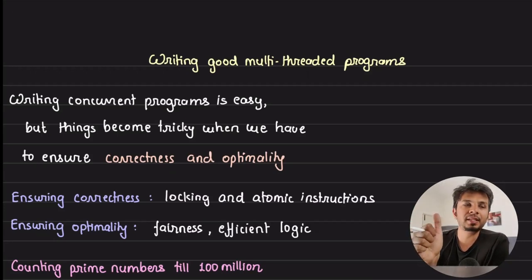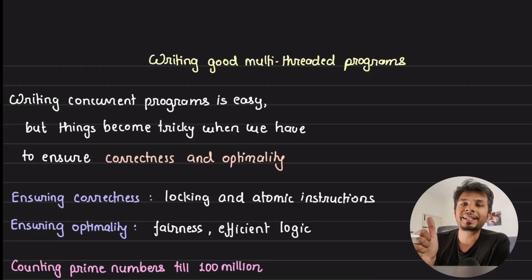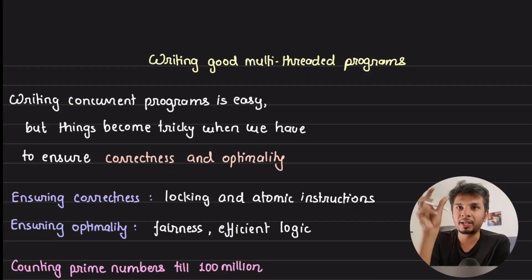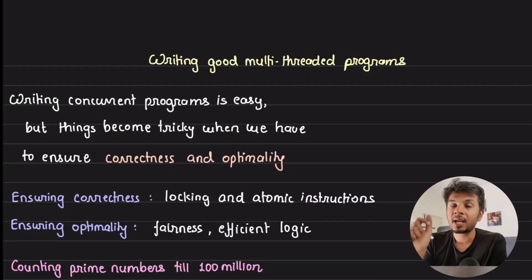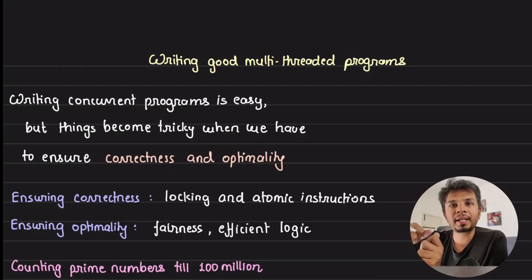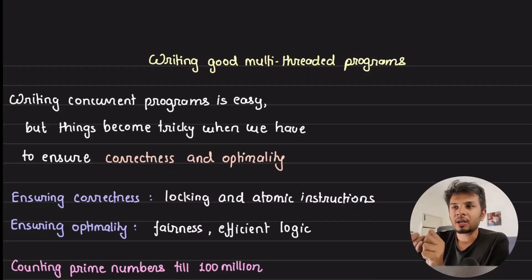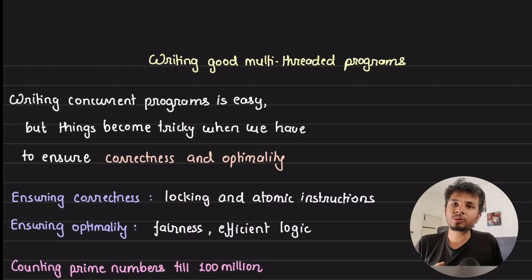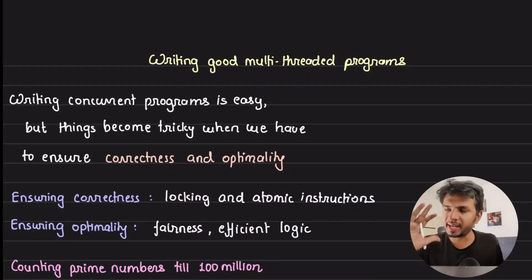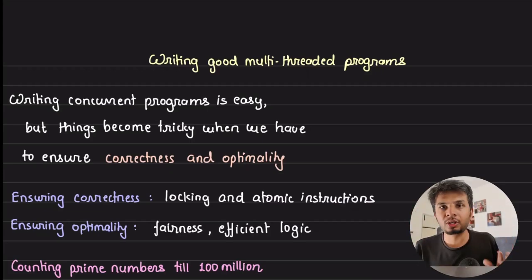It is correct, which means no matter what, there would not be a race condition or any inconsistency in data — which typically happens when you have a shared global variable across multiple threads. And it ensures optimality, which means this is the best you can do to get performance out of your system. You are not wasting any CPU cycles; you are doing your best to get the most out of it.